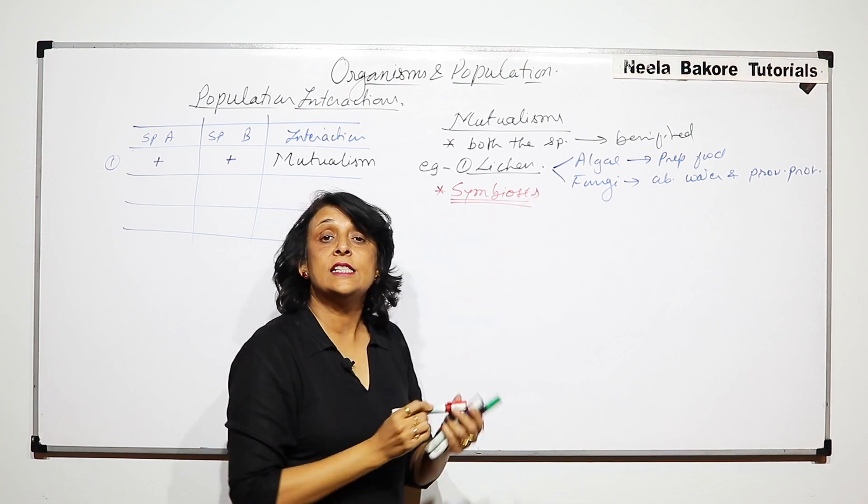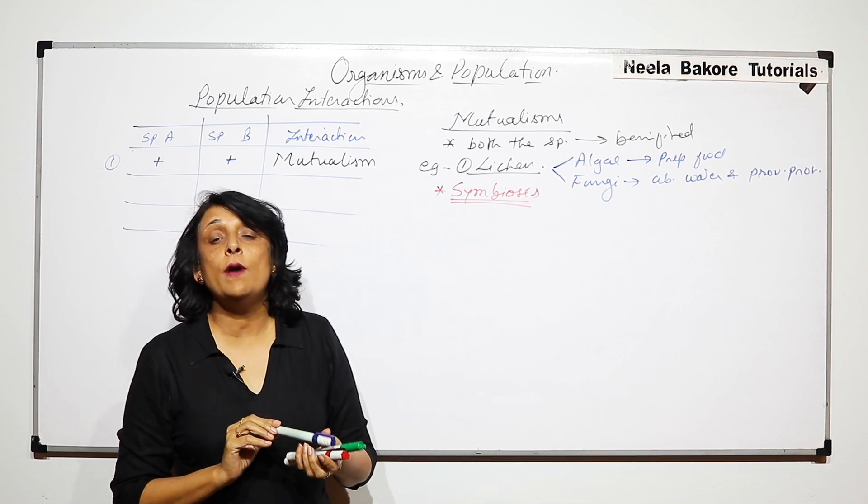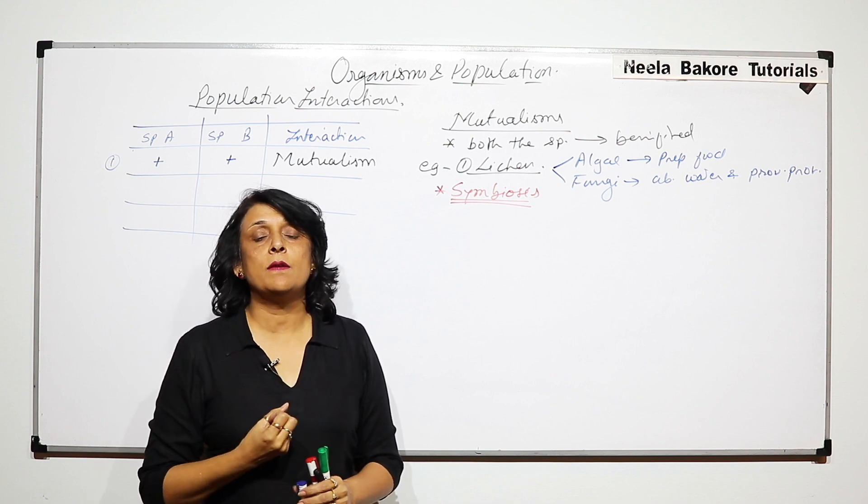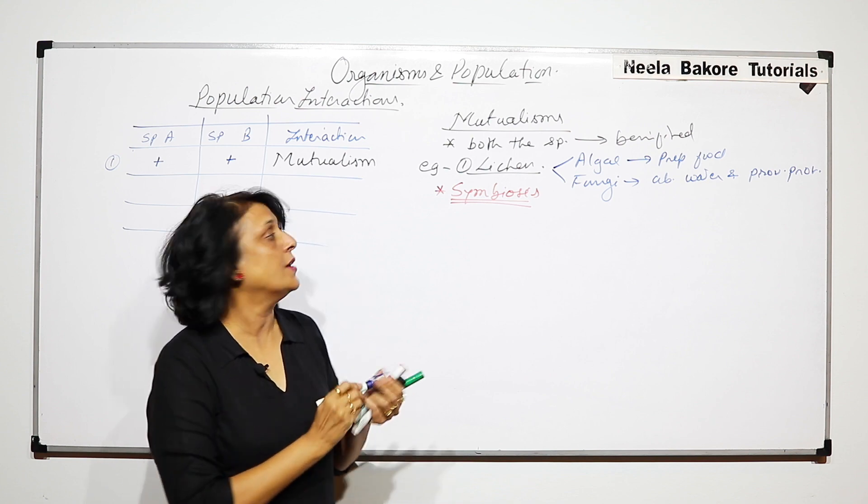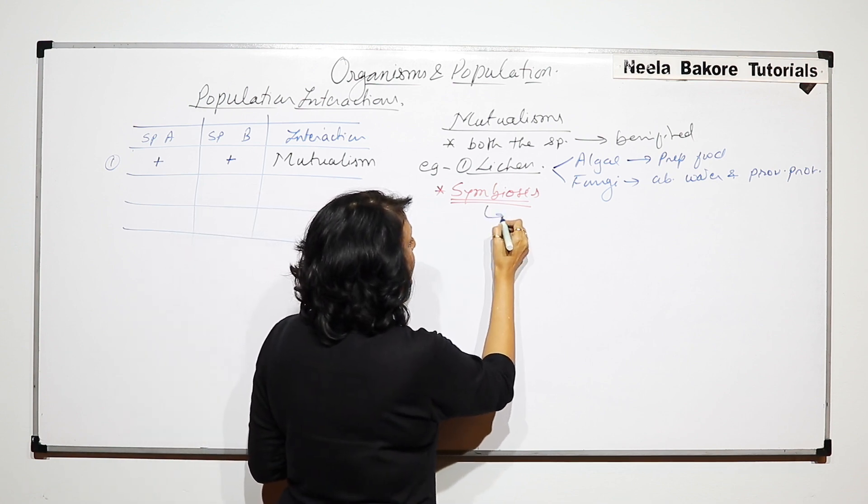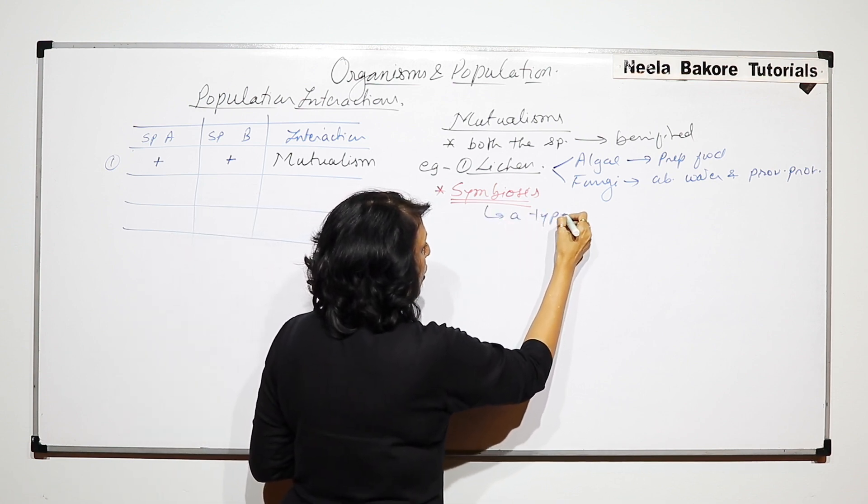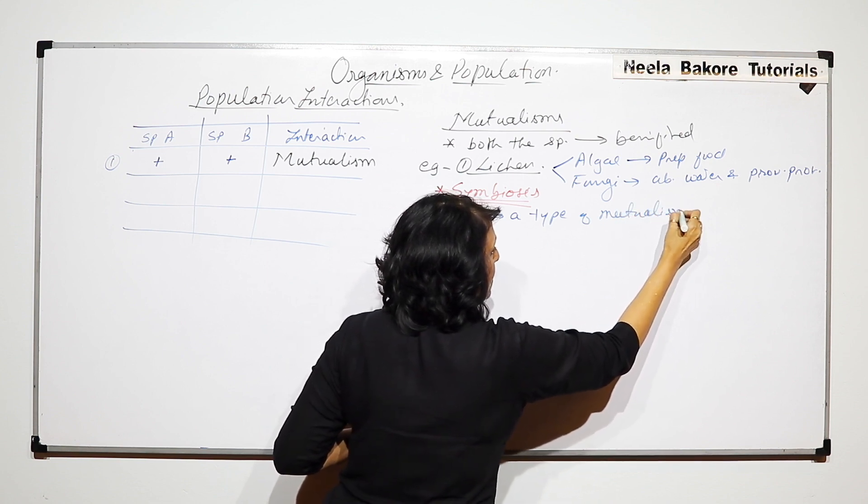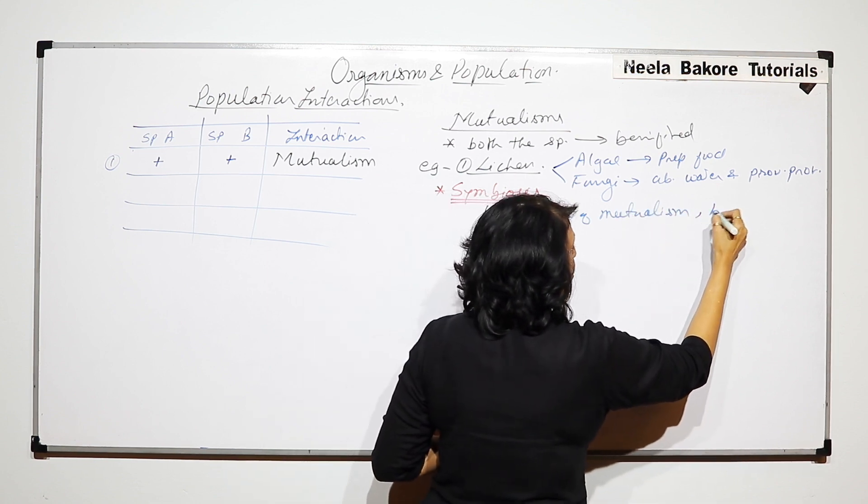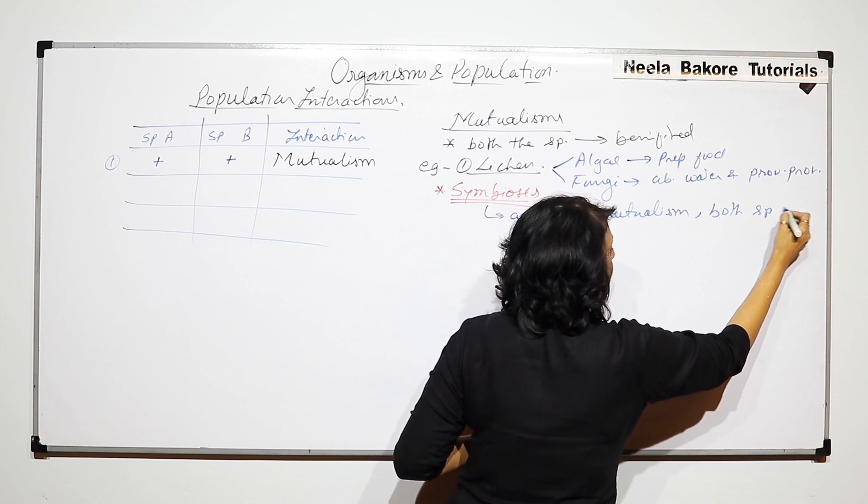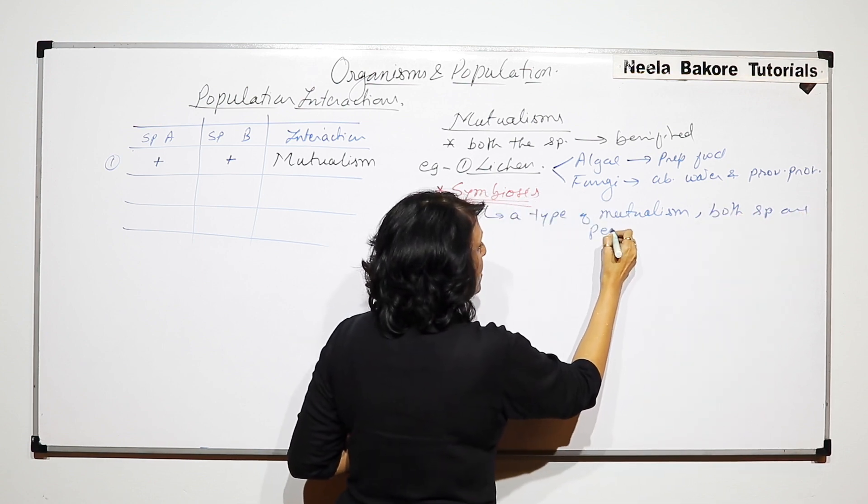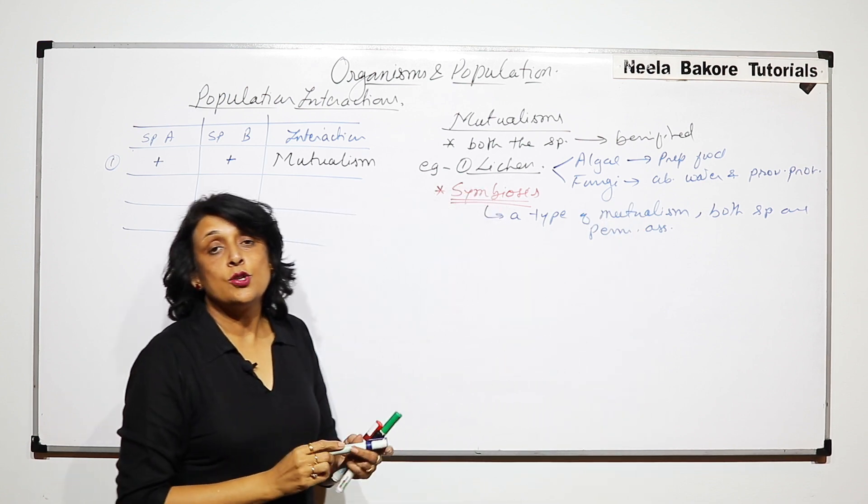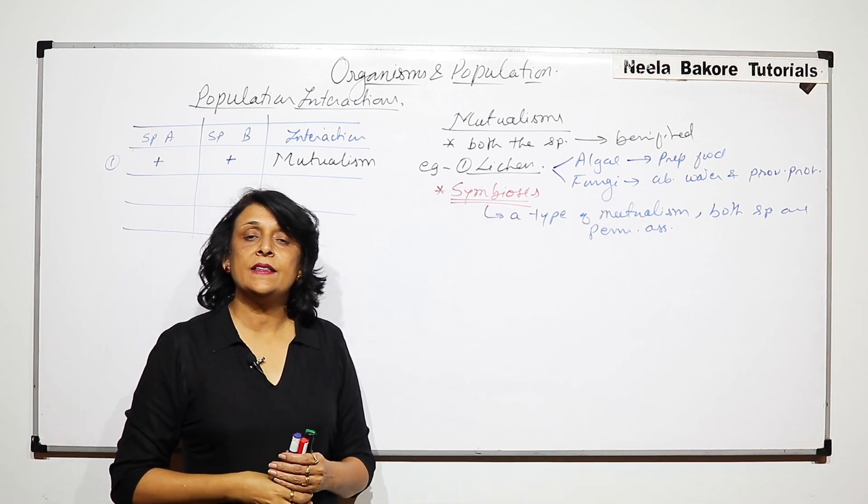Symbiosis is a type of mutualism in which both the species permanently remain associated with each other. So it is nothing but a type of mutualism where both species are permanently associated with each other. So if we separate the algae and the fungi, they won't be able to survive without each other.